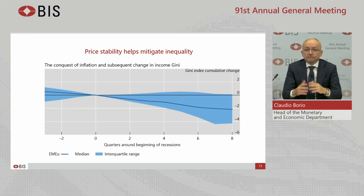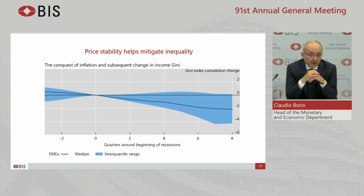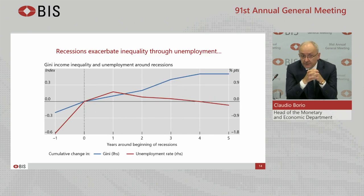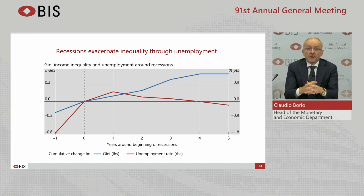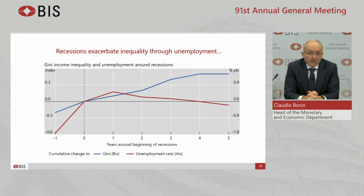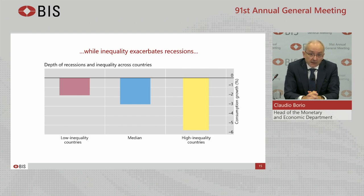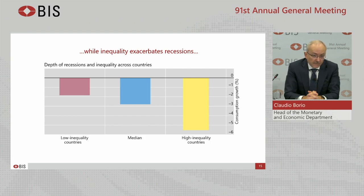What about recessions? Well, it stands to reason that recessions should widen inequality. In particular, the unskilled are the first to swell the ranks of the unemployed. This graph confirms the intuition. It indicates that following recessions, that's the dotted vertical line, unemployment rises, that's the red line, and so does inequality, and more persistently, that's the blue line. But the relationship goes further. Evidence suggests that all else equal, deeper recessions go hand in hand with higher inequality. This is shown in this graph. We see that in a sample of advanced and emerging market economies, recessions become deeper as we move from lower to higher inequality countries, the red, blue, and yellow bars, respectively. This could reflect a larger proportion of vulnerable workers in more unequal societies.